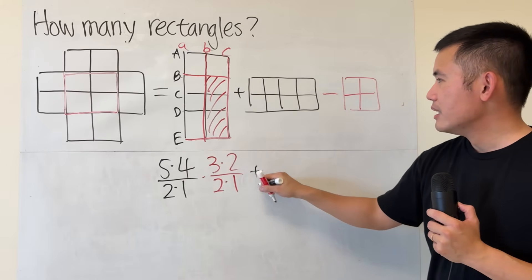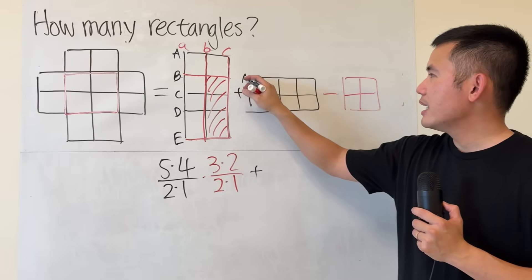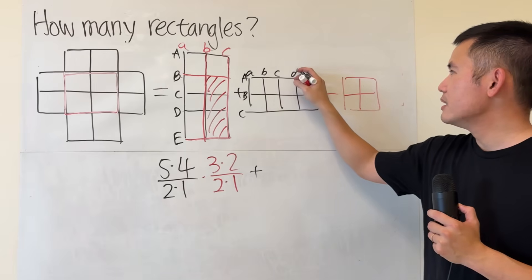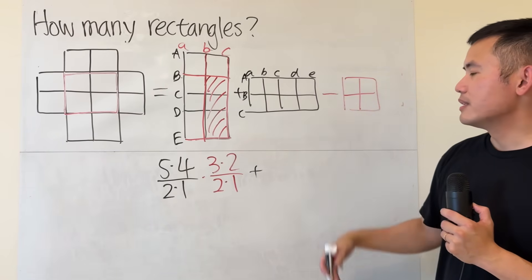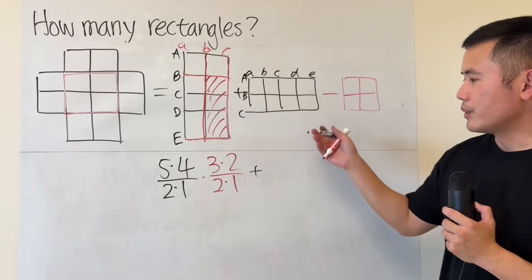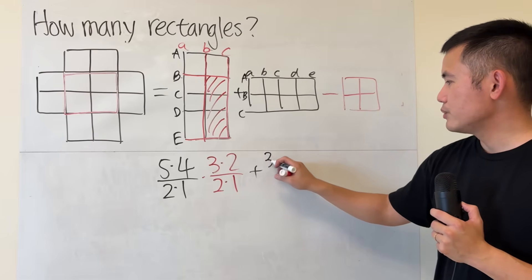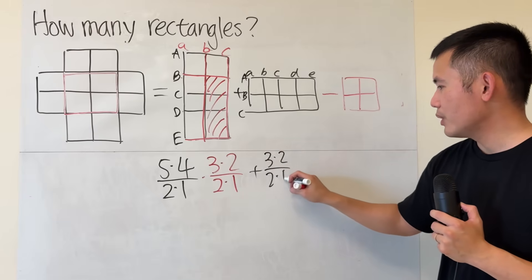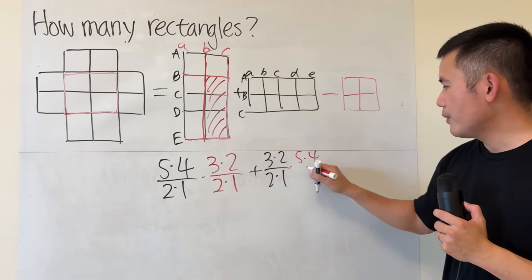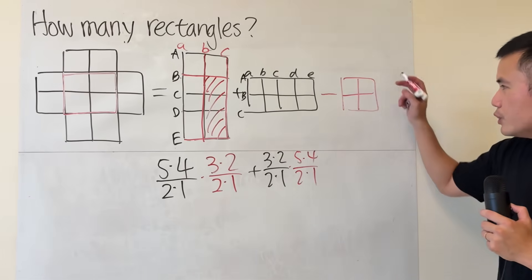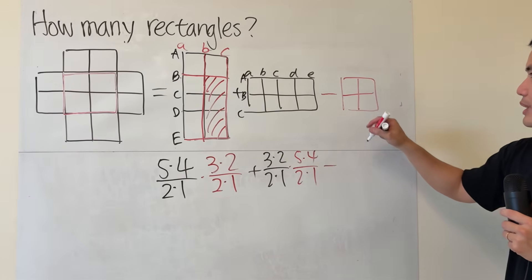And then, it's the same thing because we have A, B, C, three choices horizontally. And then, A, B, C, D, E, five choices vertically. So, I would just say, just to match the colors, 3 times 2 over 2 times 1. And then, times 5, 4. And then, 2, 1. Now, finally, we just have to subtract the number of rectangles that we have here.